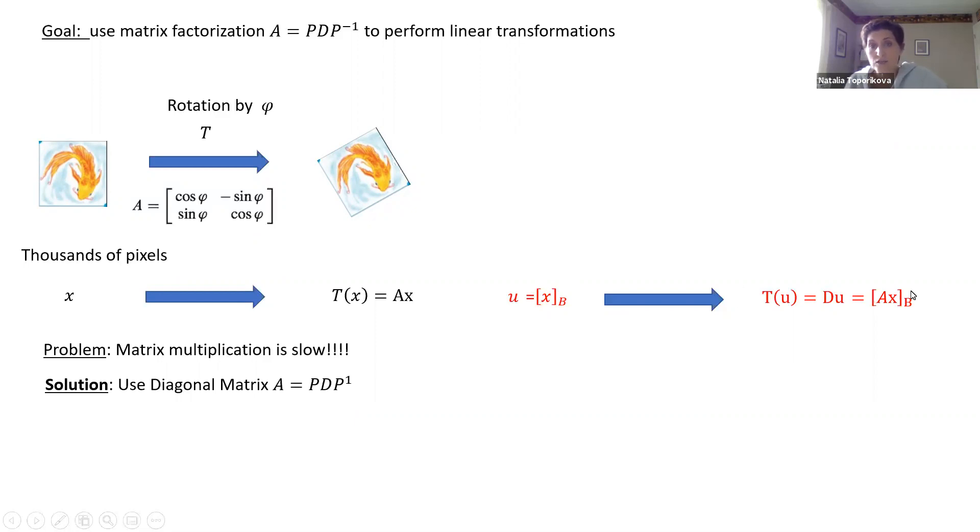And this image will actually be exactly our original image T(X) or A times X, but it's just expressed in the new basis B. And our basis, we discussed it in the previous chapter, is the basis which consists of eigenvectors of our matrix A. And this matrix P, which we use to move back and forth between our variables X and U, just consists of the basis vectors. And we carried out these calculations in the previous chapter.